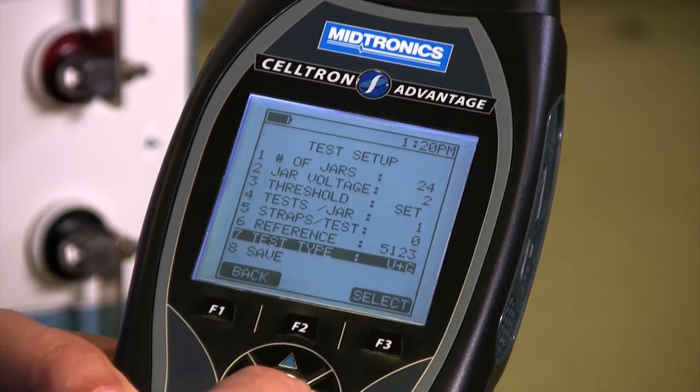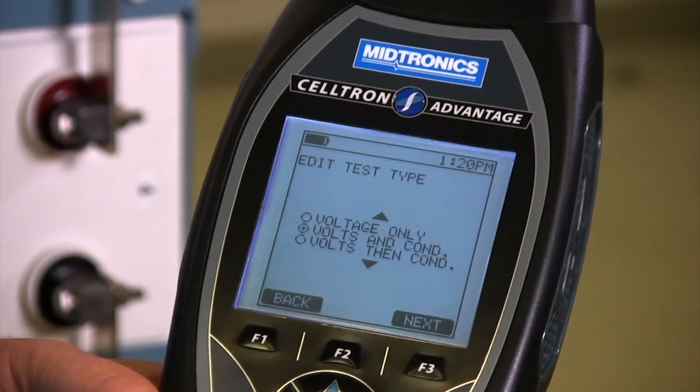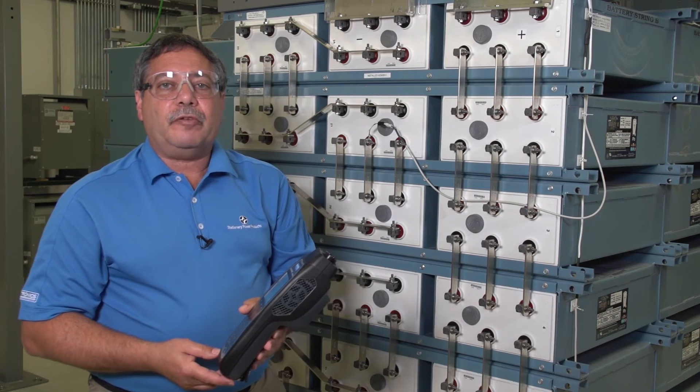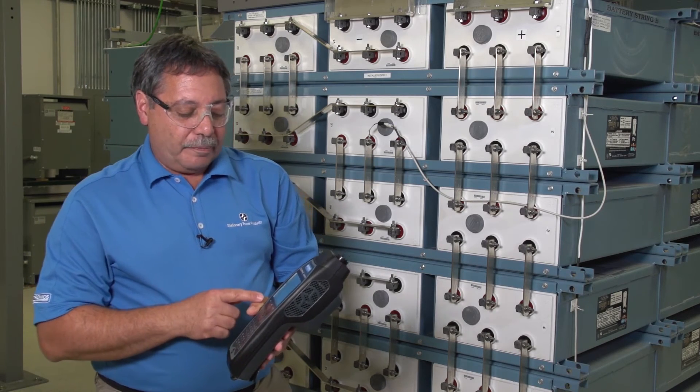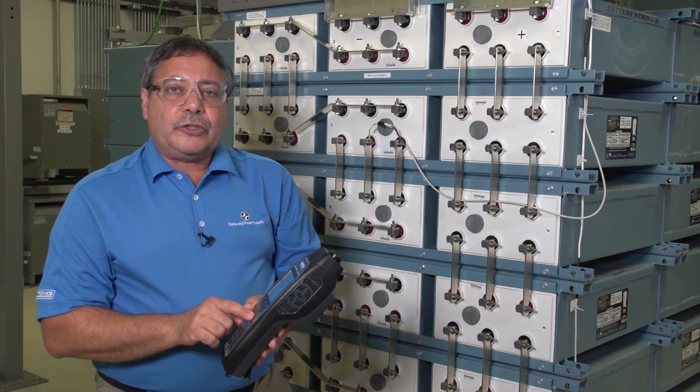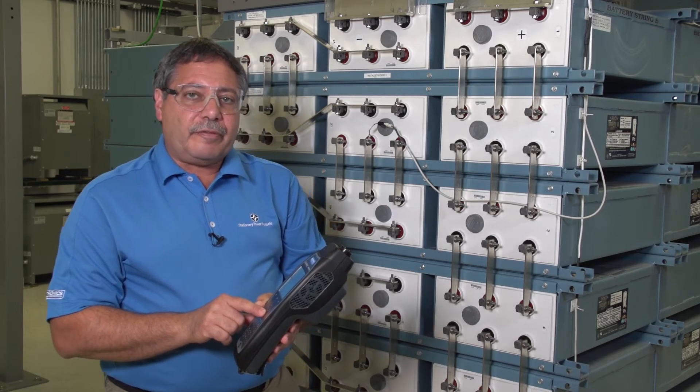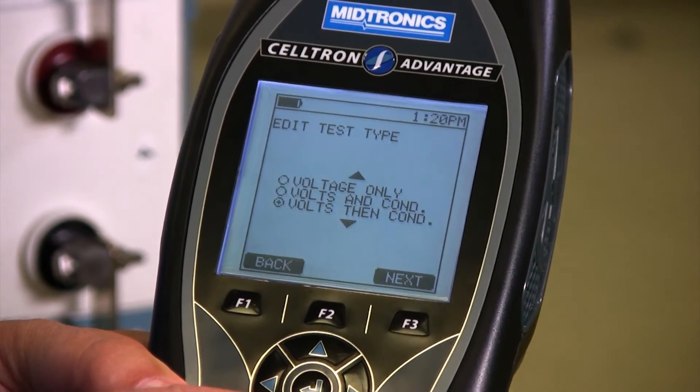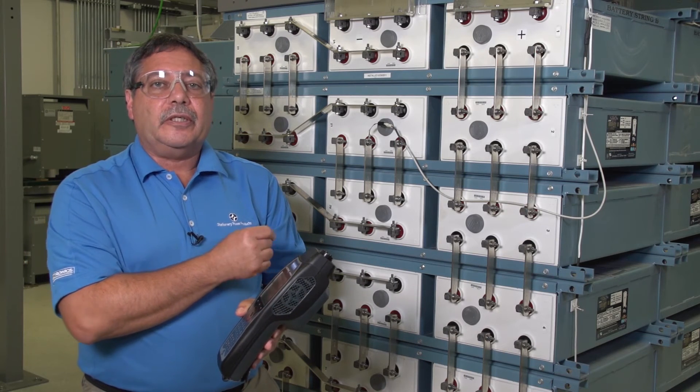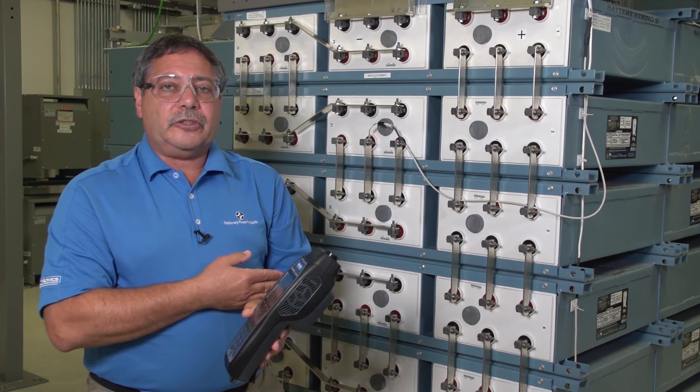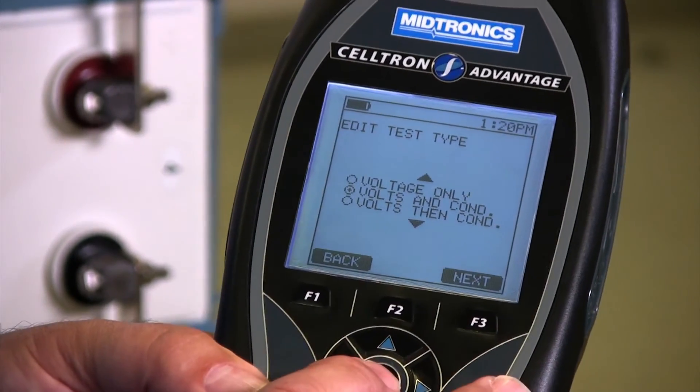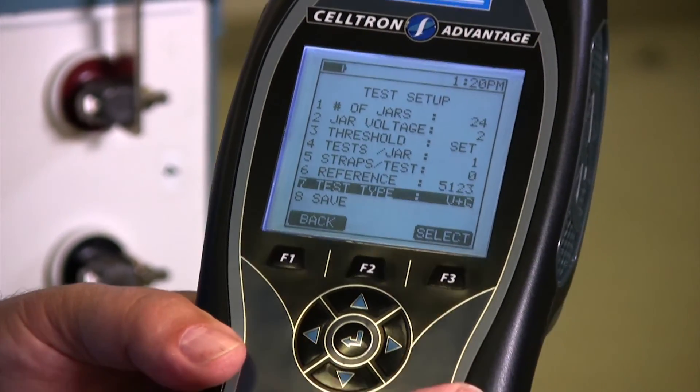Next is the test type. So test type gives me three options. If I happen to be doing volts only because maybe I have to check my voltages on a monthly basis, I can do that. Volts and conductance is the default where it takes the voltage readings and then does the conductance reading right after it. Or you have volts then conductance mode, which will let you take all the voltage readings first of all the cells, then go back and do the conductance readings and it puts the two readings together. So we're going to pick volts and conductance, which again is the default.